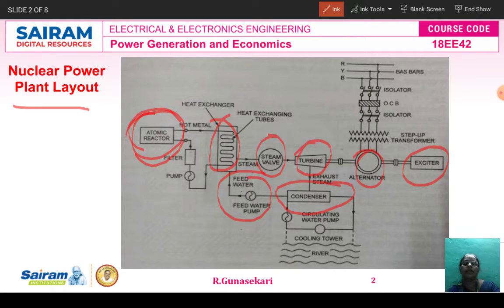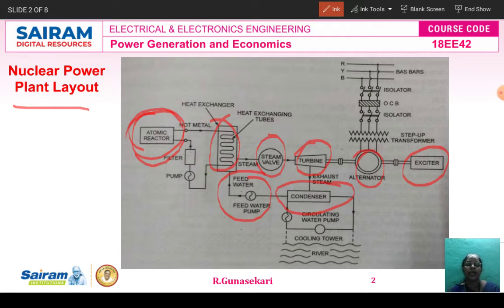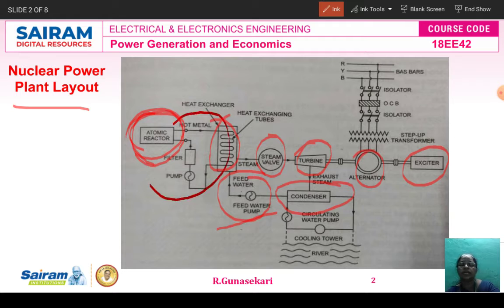Then that hot metal comes to the heat exchanger. The exhaust steam is condensed by the condenser, then converted into water, and then it is made up by the feed water. This feed water is fed to the heat exchanger with the help of a feed water pump, and then it goes again to the reactor. This is a closed cycle.